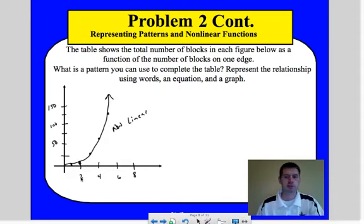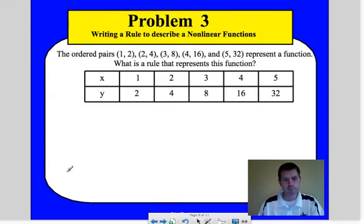So we're able to represent that using words. It's a cube of its sides. That would be words. The equation was y equals x cubed. The graph, well, it's pretty straightforward. You just plot the points we already found, and then connect the lines when needed.